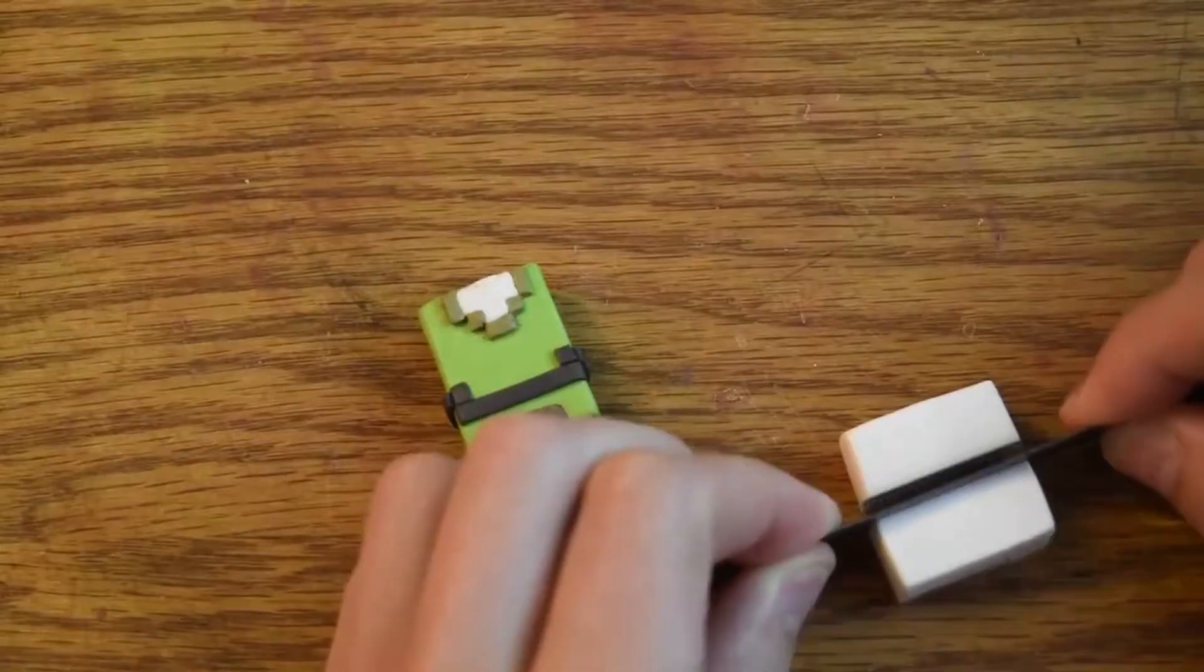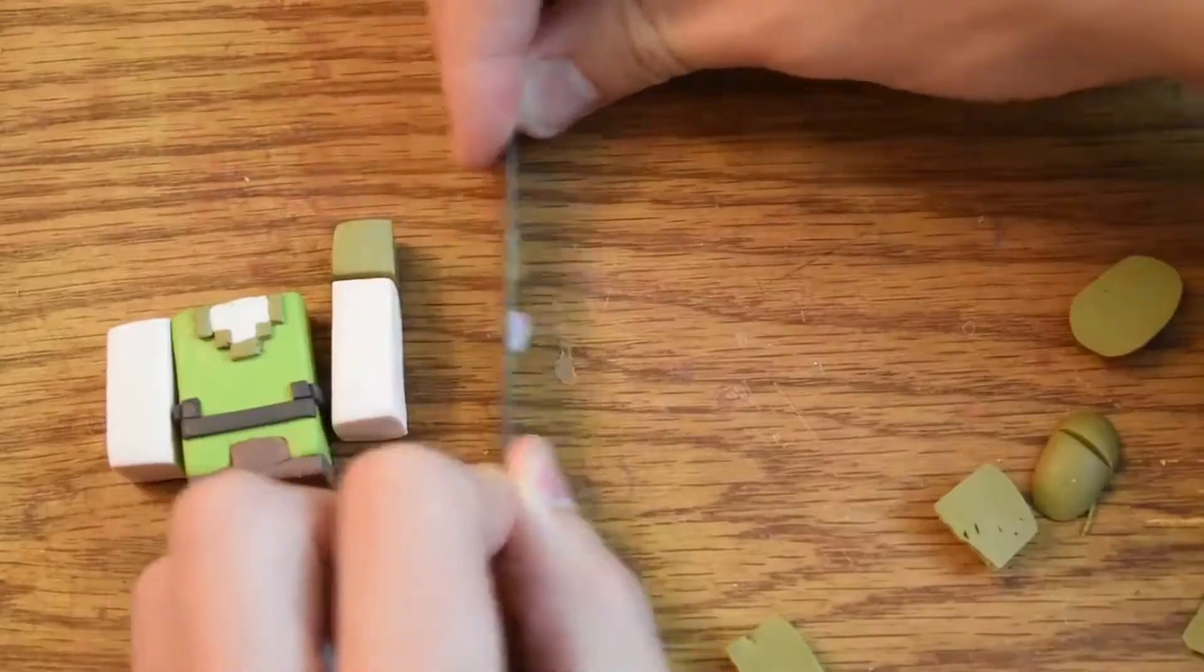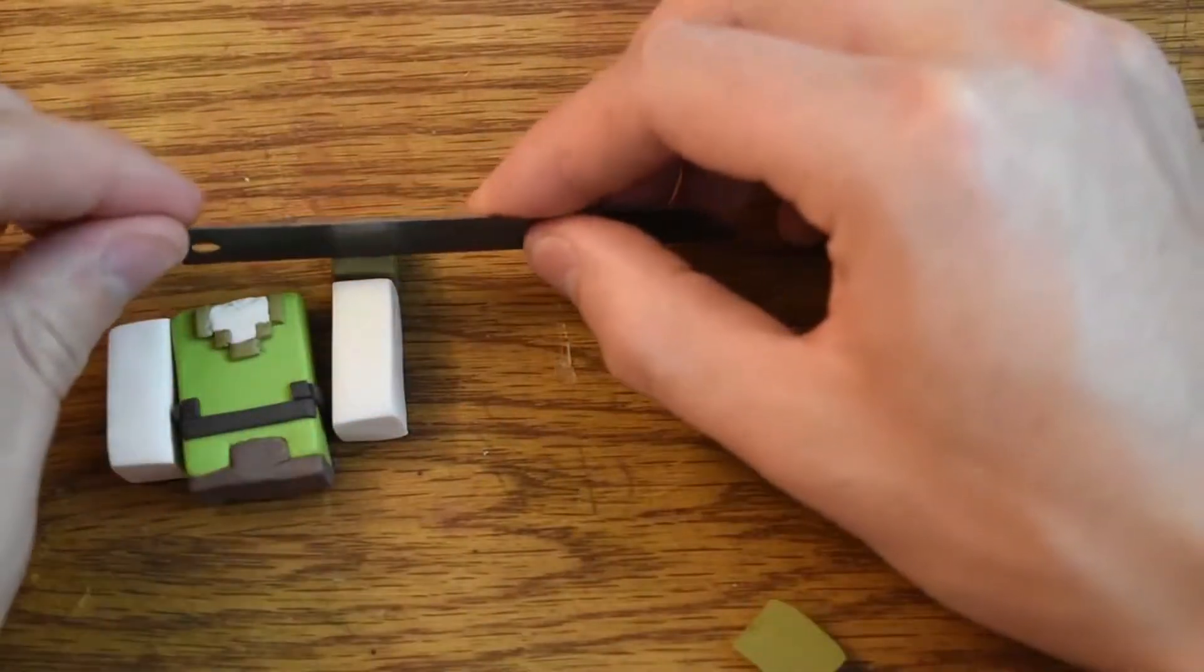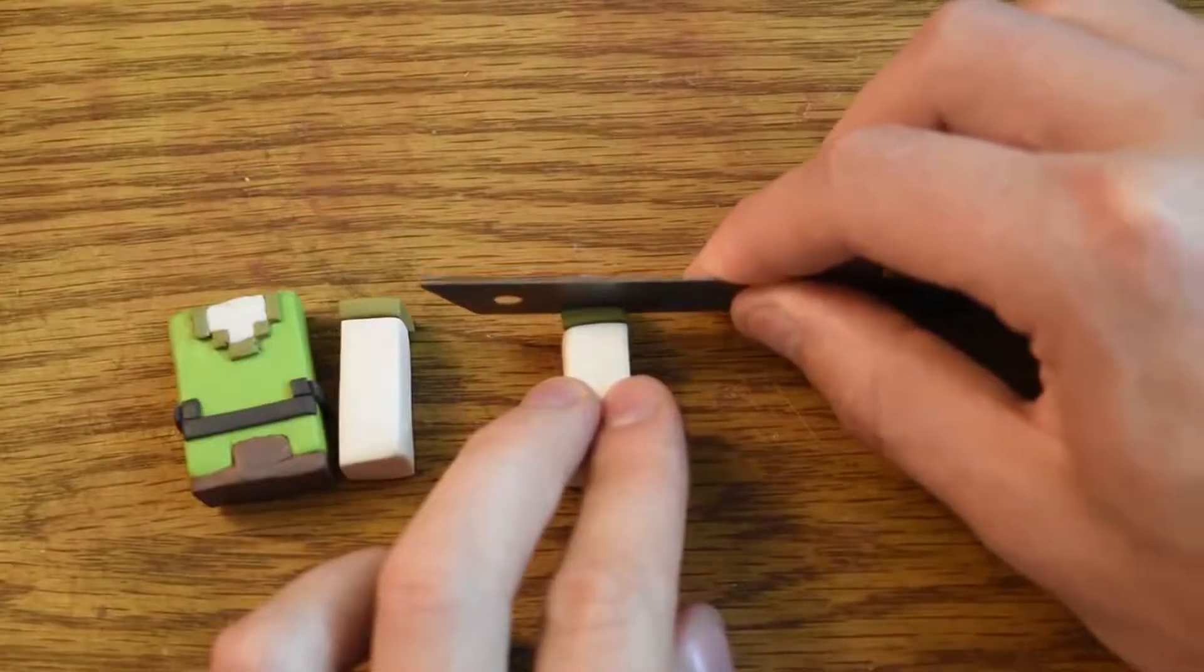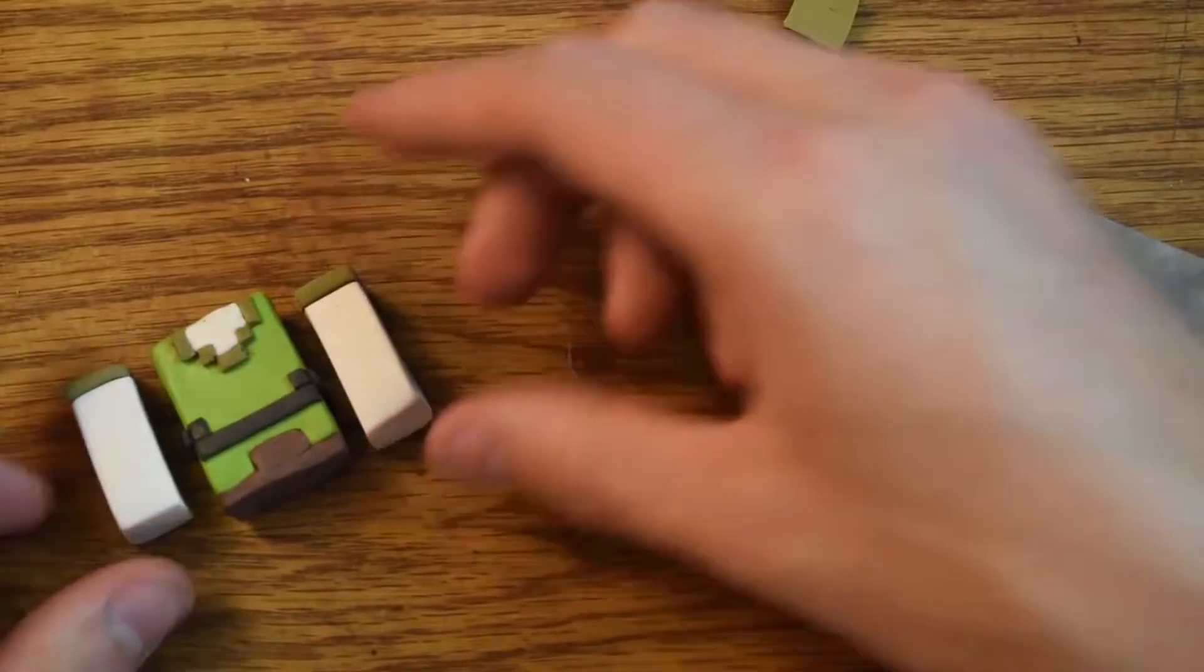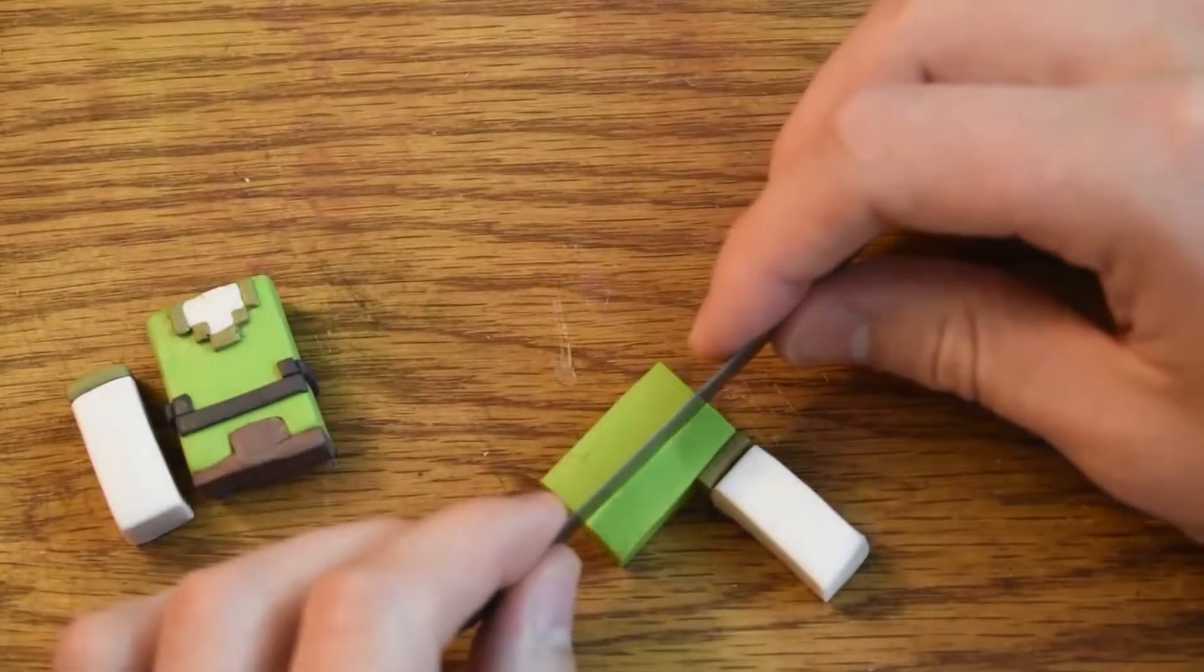Here we have these big old rectangles for the arms. And for the arms you can basically do the same rule that they're going to be about the same length as the body, and that works out pretty well.